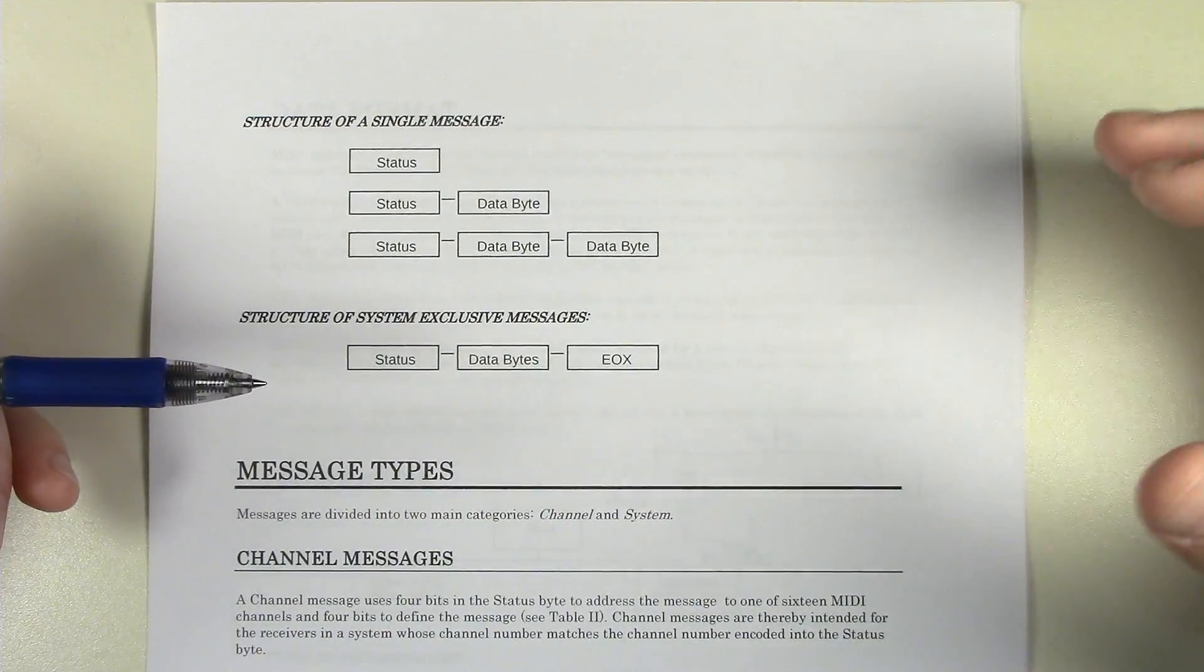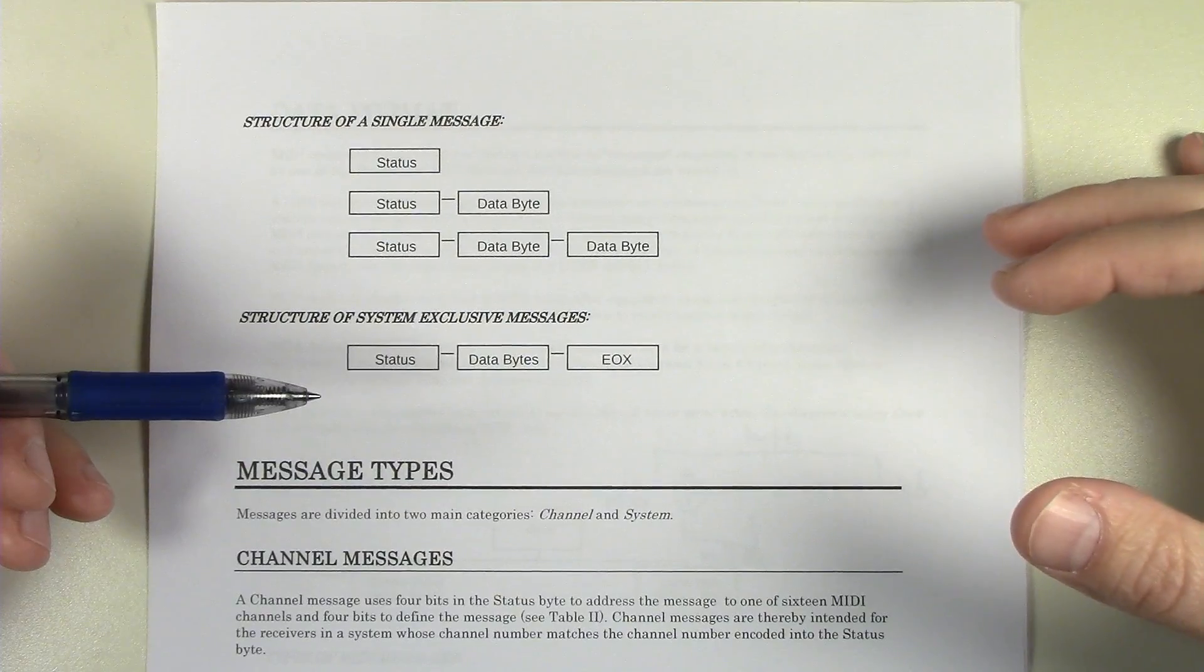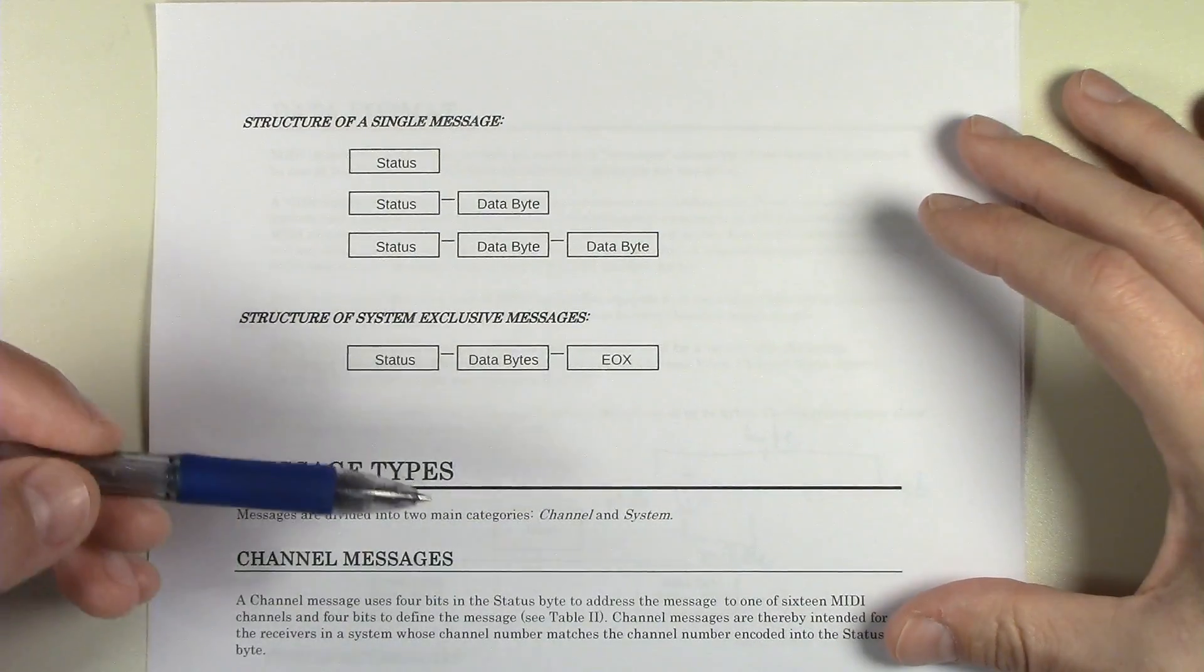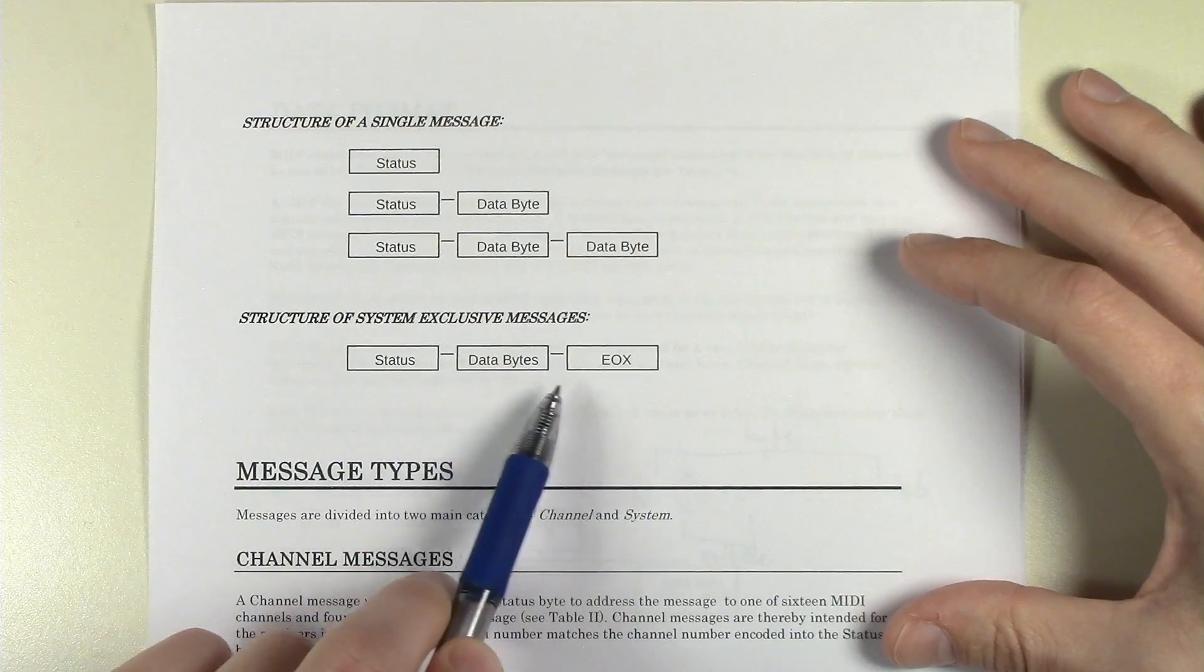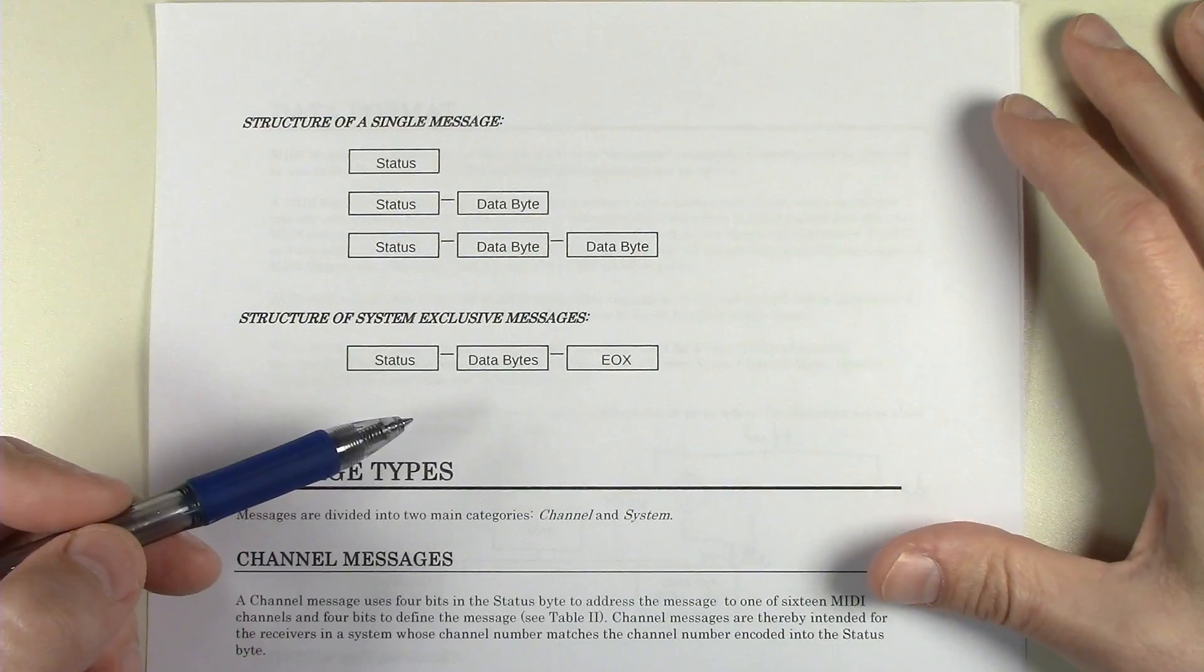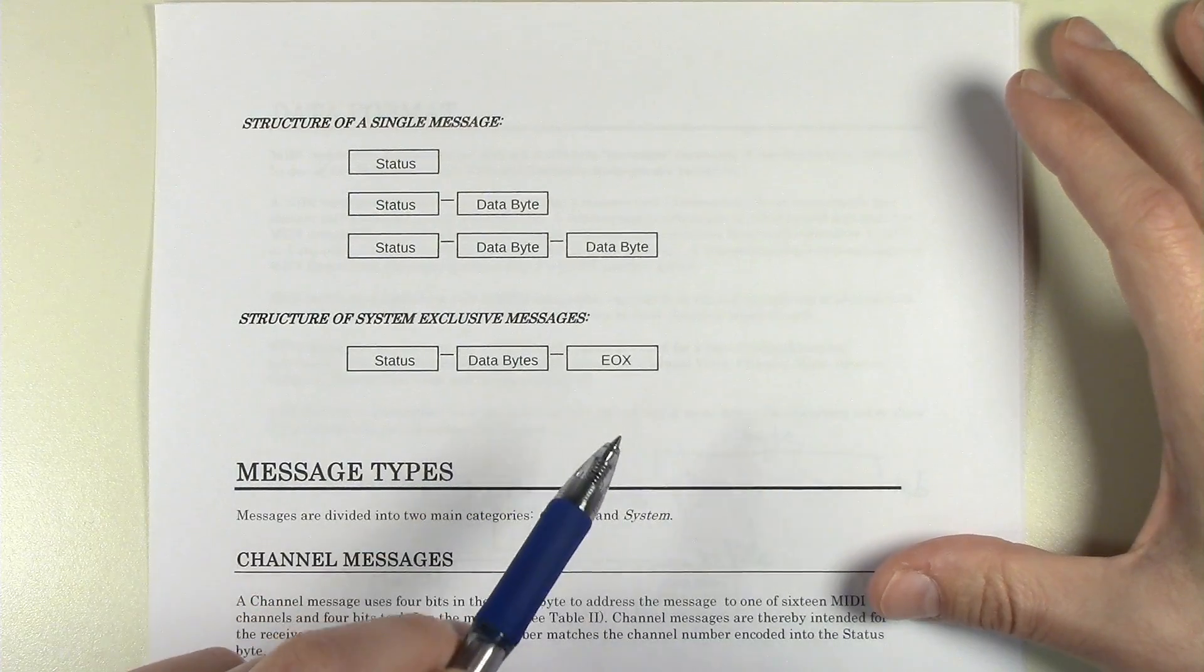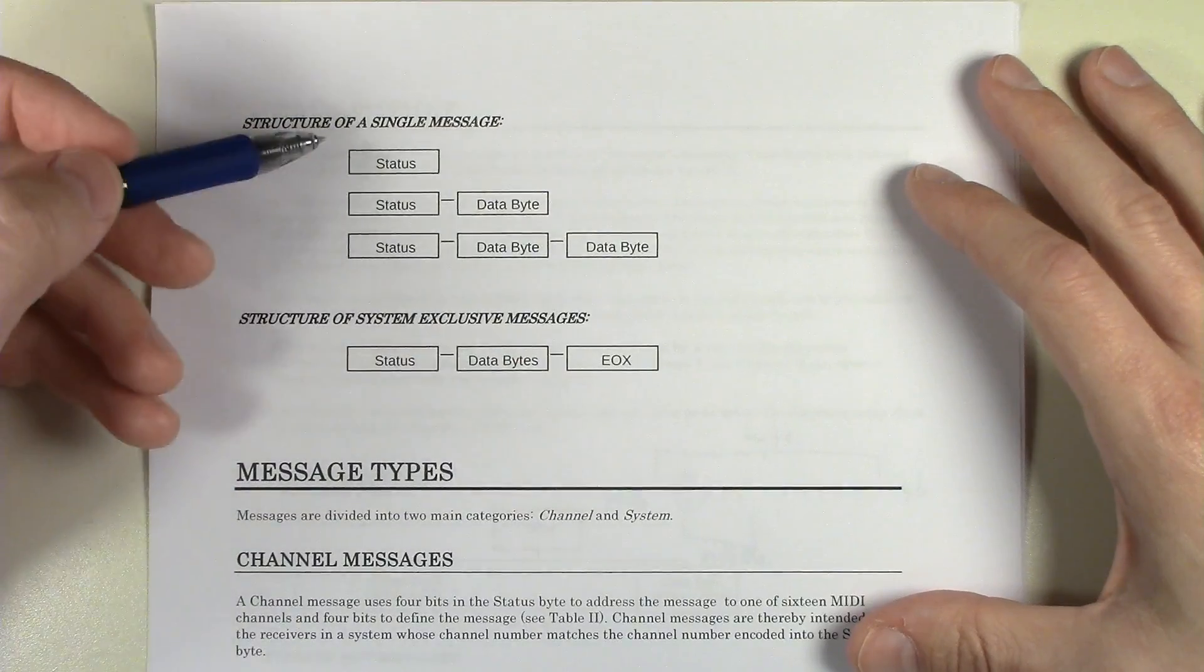And then there's a special kind of message called a system exclusive message. This is for sending manufacturer specific data, so things like firmware updates, patch dumps, things that are specific to a product, and maybe there's some software in the computer that wants to talk to the product. Usually, if you look in the back of a manual for a product that supports MIDI, you'll find some of these specified and the layout of how they work. They're a little bit different because they can have a status byte and then they can have any number of data bytes. There is a minimum number, but they could have a few data bytes all the way up to thousands or as many as you want. And then there's a special message at the end that says this is finished. There's no more, the system exclusive message is done. And that looks like a status byte, but it's actually not used that way. In this case, it's a marker that says end of exclusive. That's what EOX means. So that's basically the two general types of messages.